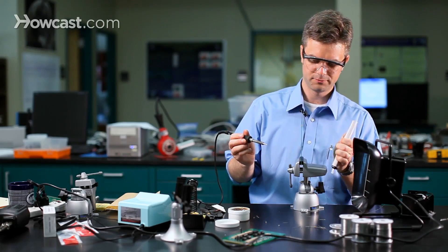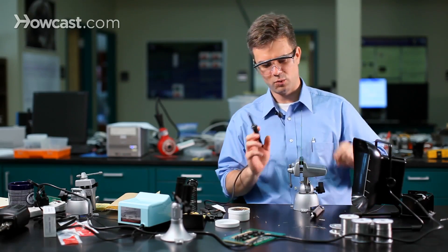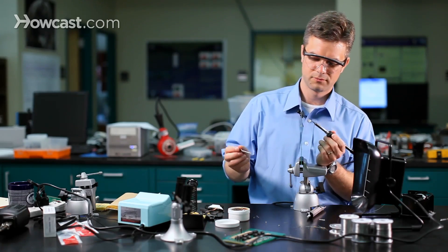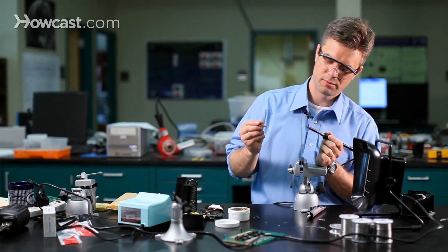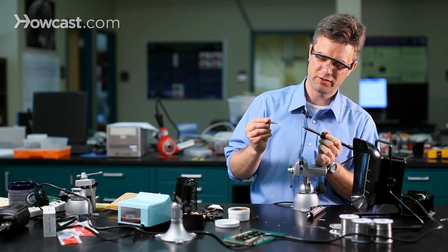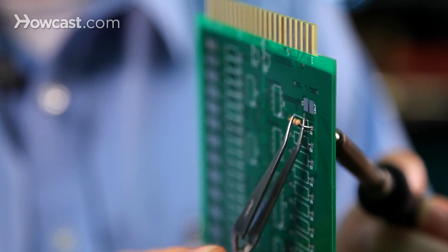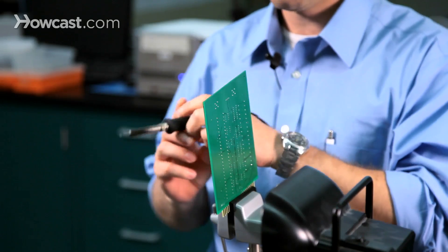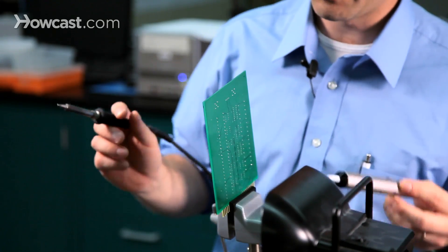So we've removed the solder and now we want to pull that terminal out of the board. So we'll heat the device again since some residual solder may remain inside the hole and pull with tweezers or pliers. Now we'll repeat the procedure with the solder sucker on the other terminal.